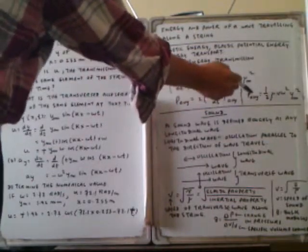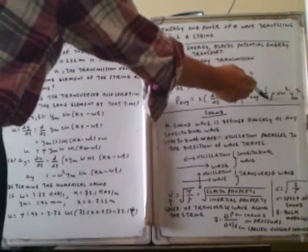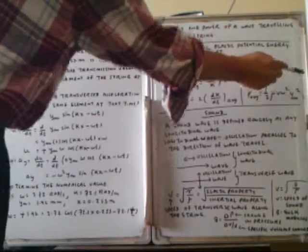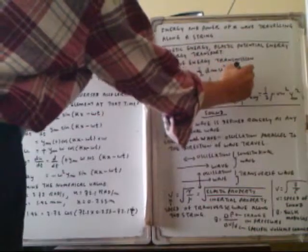The average power is equal to ½·μ·v·ω²·Ym², where μ is the linear mass density, v is the wave velocity, ω is the angular velocity, and Ym is the maximum amplitude.